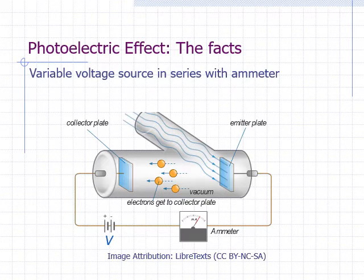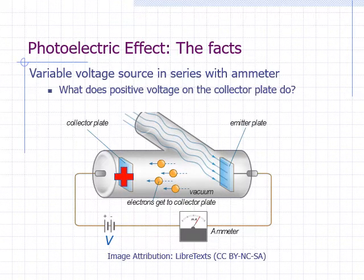A variable voltage source in series with the ammeter allows us to cause the photoelectrons to speed up or slow down. What does the positive voltage on the collector plate do? Since electrons are negatively charged, a positively charged collector plate would attract the photoelectrons and slow them down.